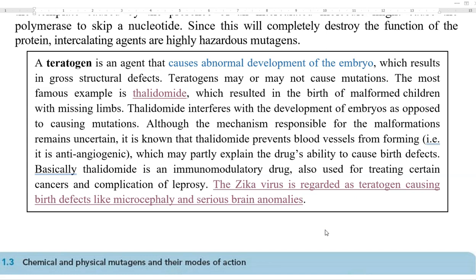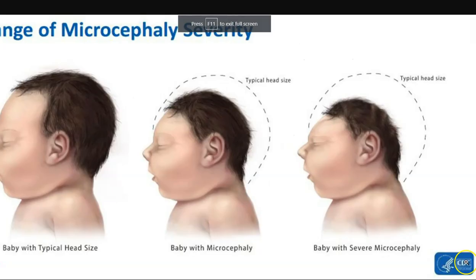However, it is said that thalidomide prevents blood vessels from forming — that is, it has an anti-angiogenic action — which may partly explain the drug's ability to cause different kinds of birth defects. Basically, thalidomide is an immunomodulatory drug and can also be used in treating certain cancers and complications associated with leprosy. Another classical example is the Zika virus, which is regarded as a teratogen causing birth defects like microcephaly and serious brain anomalies. Here you can see the microcephaly condition — the normal head size compared to the reduced head size in persons affected with the Zika virus, with the third image showing severe microcephaly resulting from the Zika virus.